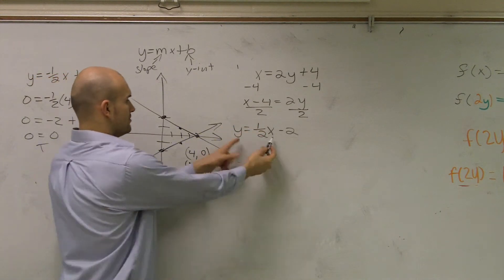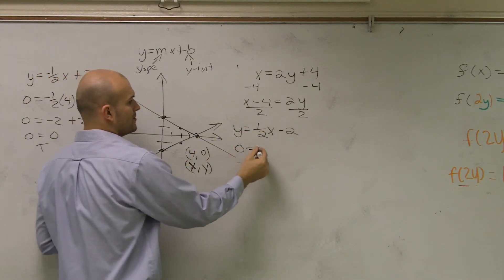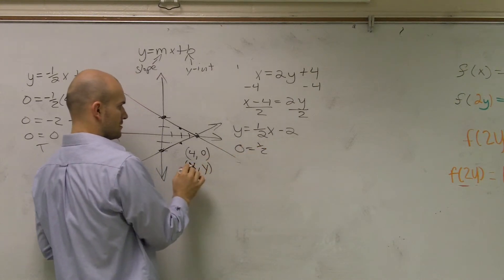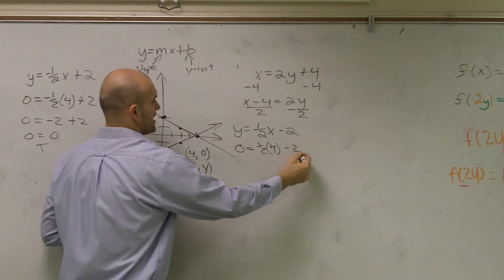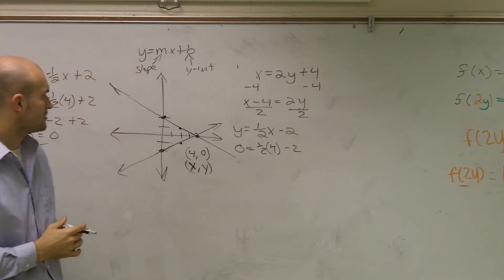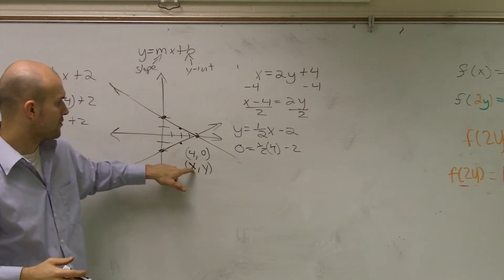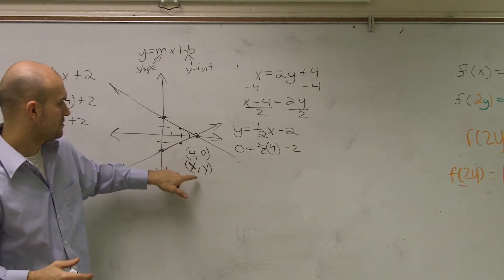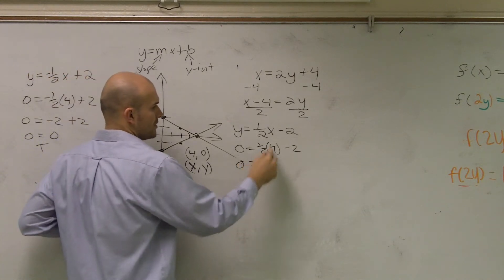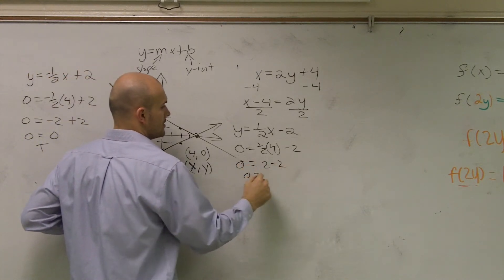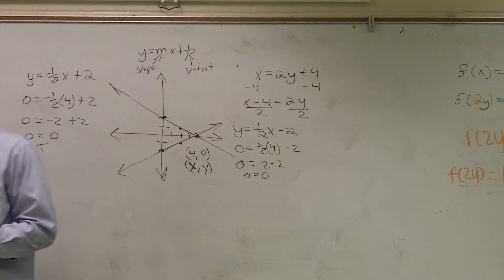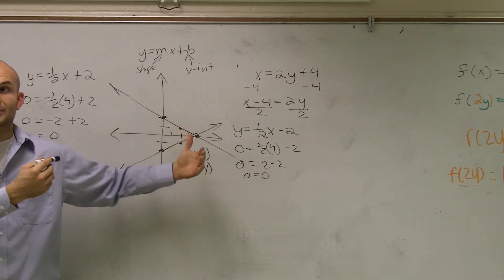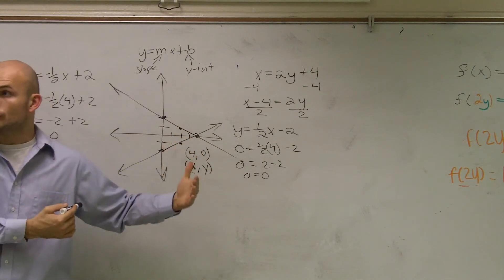Let's look over here. Plug your 0 and your x. y equals 0, x equals 4. 0 equals 2 minus 2. 0 equals 0. So therefore, what you guys notice is it doesn't matter. The x's and the y's, if I plug them into both equations, they both make the equations true.